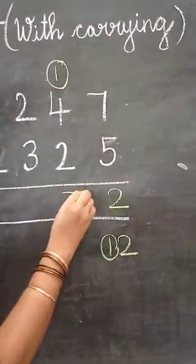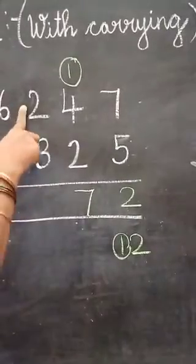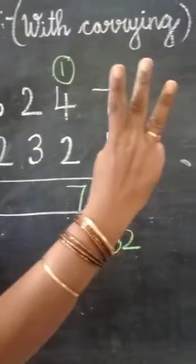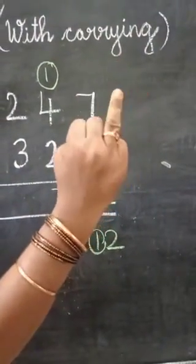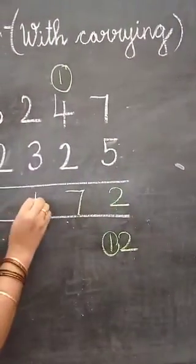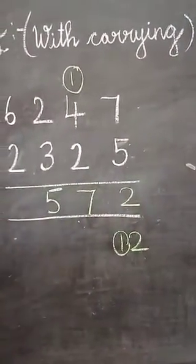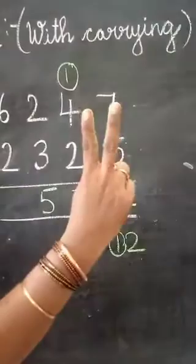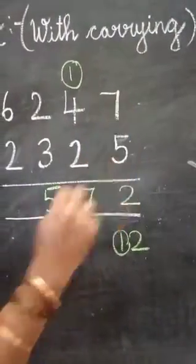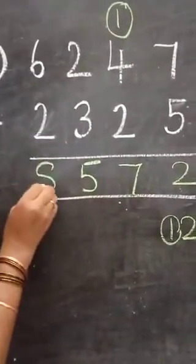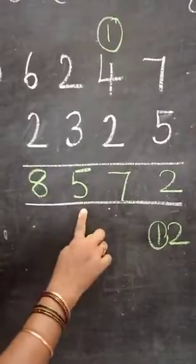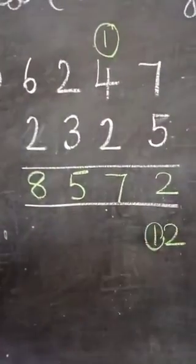2 in the mind, 3 in the finger. After 2: 3, 4, 5. 6 in the mind, 2 in the finger. After 6: 7, 8. So what is the answer? 8,572. Thank you, children.